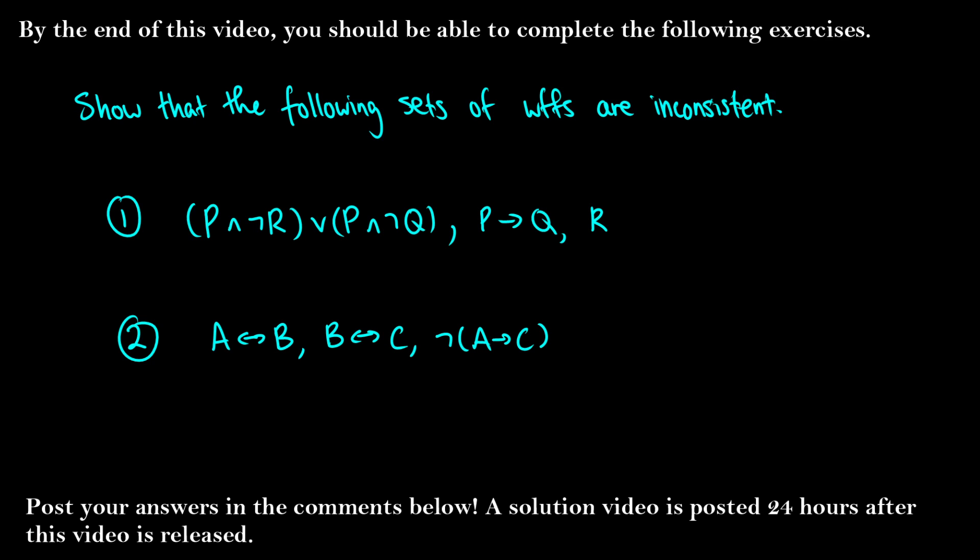In this video, we're going to continue with our discussion on truth trees, but we're going to take a look at the conditional and biconditional and rules with those, as well as their negations. By the end of the video, you should be able to show that the following sets of formulas are inconsistent using those new rules.